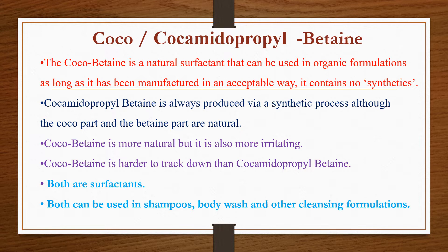Products considered natural can still contain this chemical, and some products with this ingredient may cause unpleasant side effects. As shown on the slide, CAPB is considered a natural surfactant that can be used in organic formulations as long as it has been manufactured in an acceptable way and contains no synthetics. However, CAPB is always produced via a synthetic process, although the coco part and the betaine part are natural. Coco betaine is more natural but also more irritating, and both are surfactants used in shampoos, body washes, and other cleansing formulations.